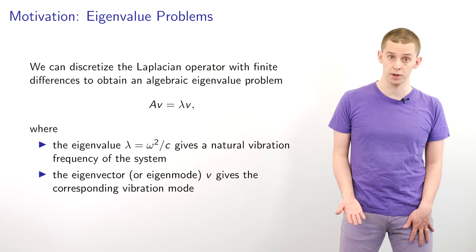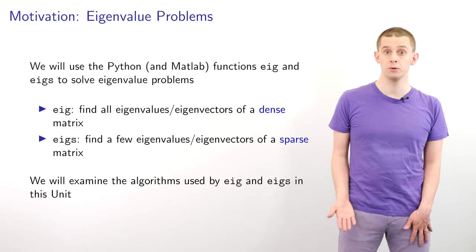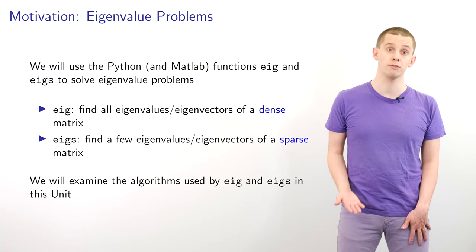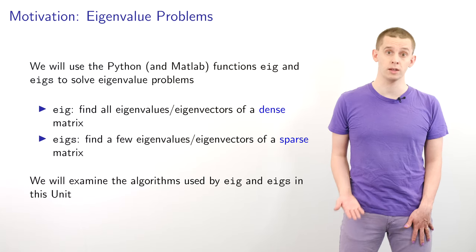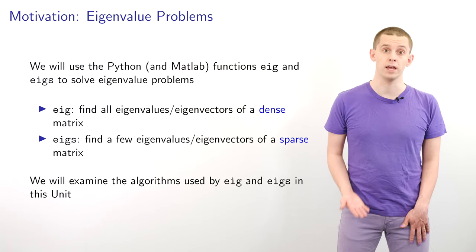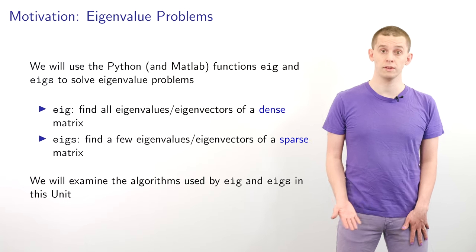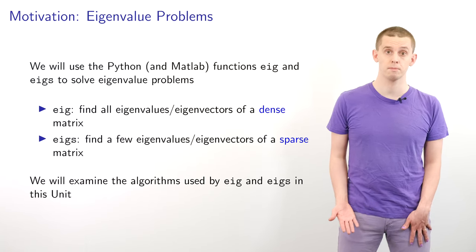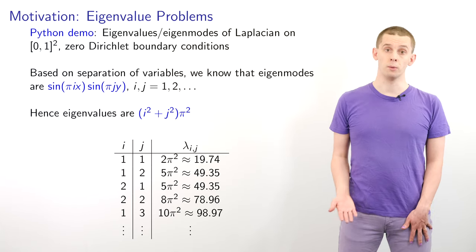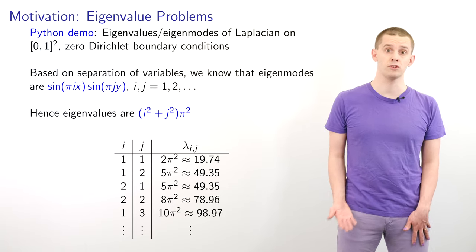Both Python and MATLAB contain library functions for computing eigenvalues and eigenvectors, and they actually share the same names. Both languages have a function called eig that can compute all eigenvalues and eigenvectors of a dense matrix. And both languages have a function called eigs that can find a few eigenvalues and eigenvectors of a sparse matrix. In this unit we are going to look at the algorithms behind eig and eigs. We'll now look at a Python demo to find the eigenvalues and corresponding eigenmodes for the Laplacian on the unit square with zero Dirichlet boundary conditions.